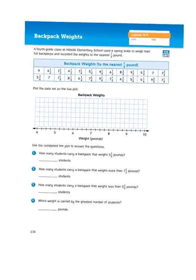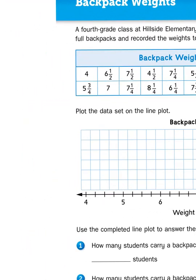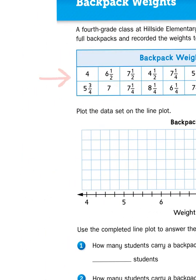Let's take a look at the story problem that gets us started. A fourth grade class at Hillside Elementary School used a spring scale to weigh their full backpacks and recorded the weights to the nearest quarter pound. As you can see we have a table here with a few dozen measurements, and we need to take all that raw data and organize it in a way so that it makes sense to us. The way we're going to do that is by charting them on this line plot graph, which is basically graph paper above a number line.